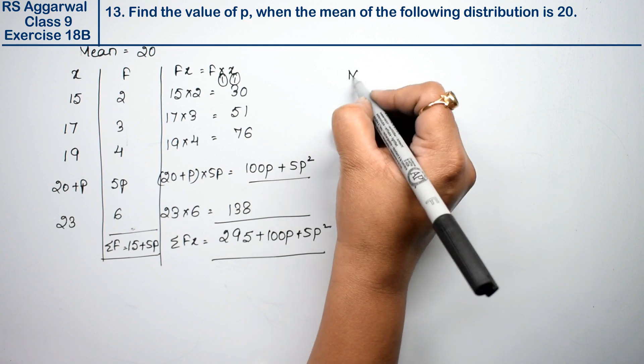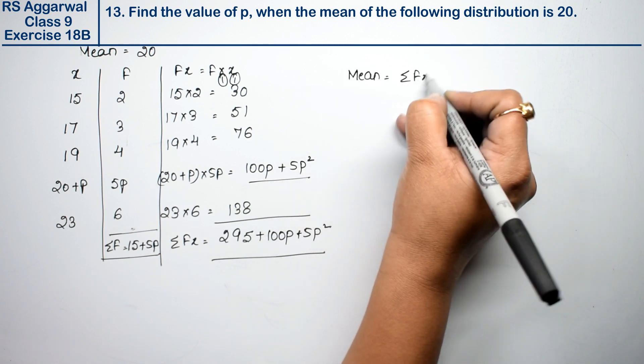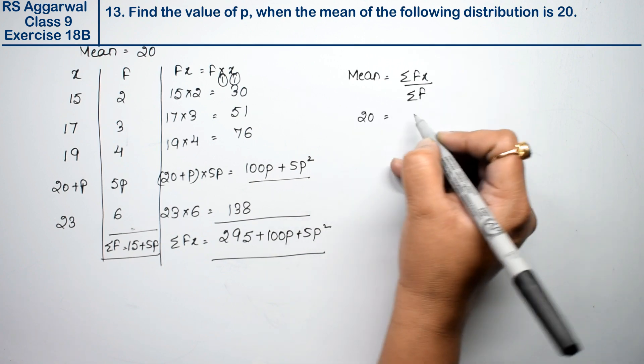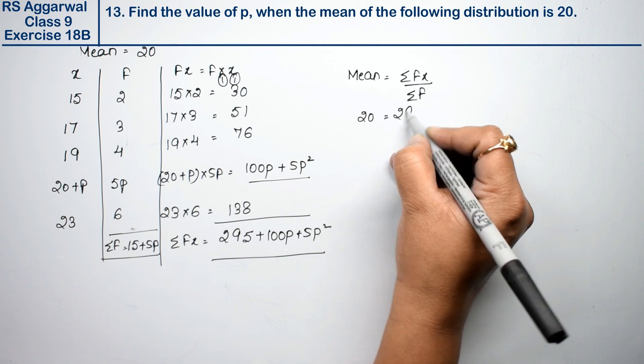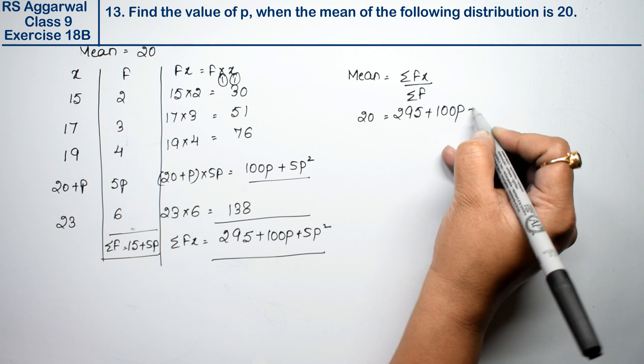The formula for mean is sigma fx upon sigma f. The mean is given as 20, so 20 equals (295 plus 100p plus 5p square) over (15 plus 5p).